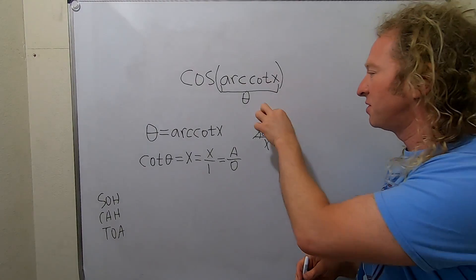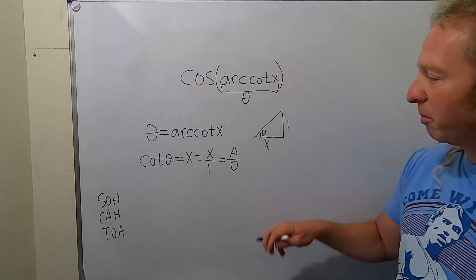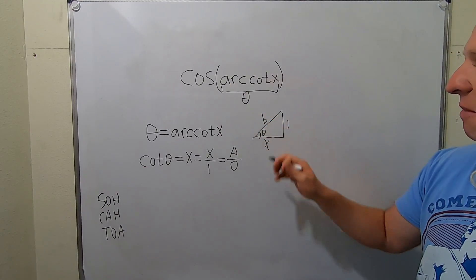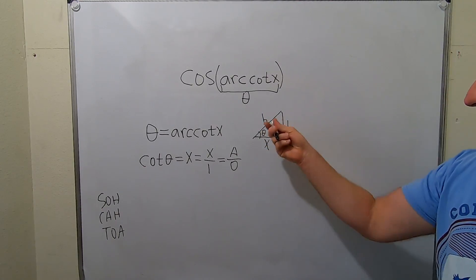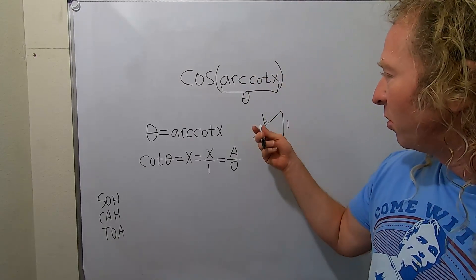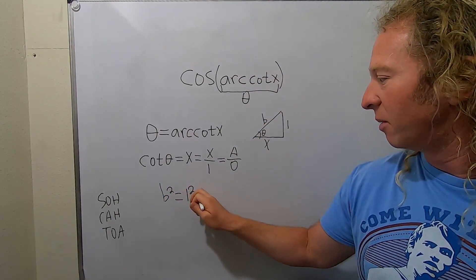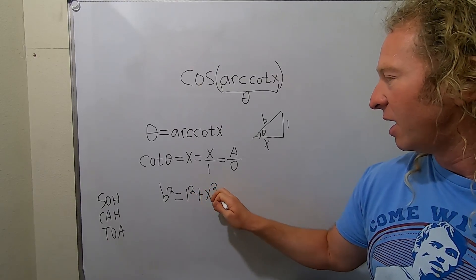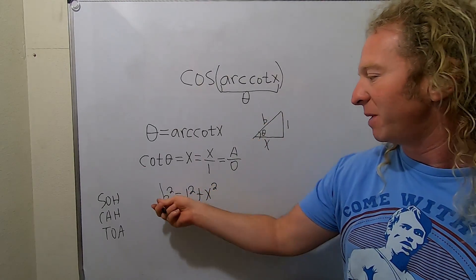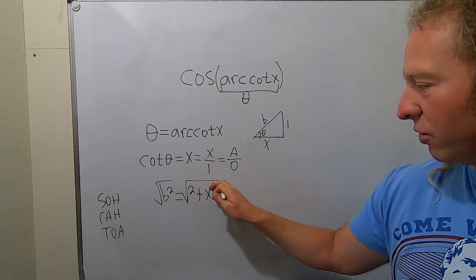Okay we need to give this a name. I'm going to call it little b. So now we use another ancient theorem. It's the theorem of Pythagoras which says that b squared is equal to one squared plus x squared. And you solve for little b. So basically you just take the square root of both sides.